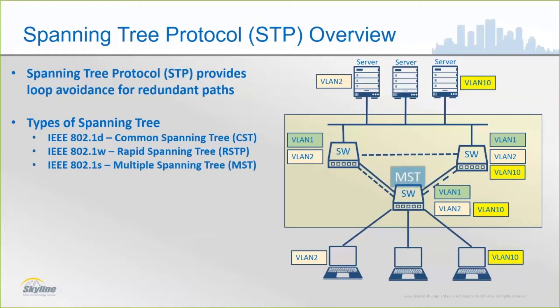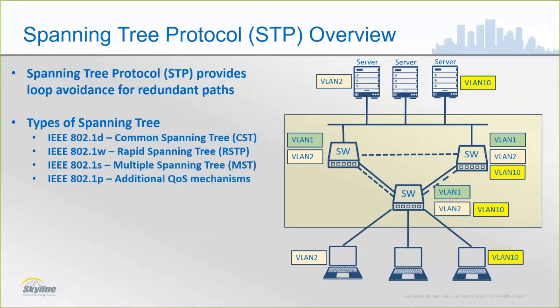Another type is Multiple Spanning Tree, or MST, which gives us the ability to map multiple VLANs to an instance of spanning tree. And 802.1p gave us additional quality of service mechanisms so that we could give higher priority to traffic flows — for example, voice versus data traffic, or real-time versus non-real-time traffic.